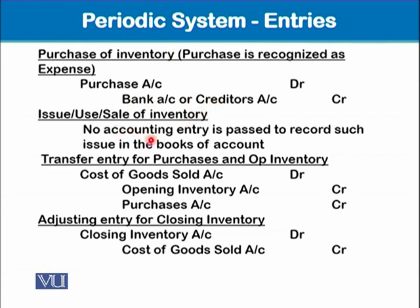When we sell inventory under the periodic system, we pass an accounting entry for sales — cash debit and sales credit, or debtors debit and sales credit. However, we do not pass any accounting entry to reflect the cost of sales. No entry is made to credit the inventory cost upon issuance or sale of inventory under the periodic system.